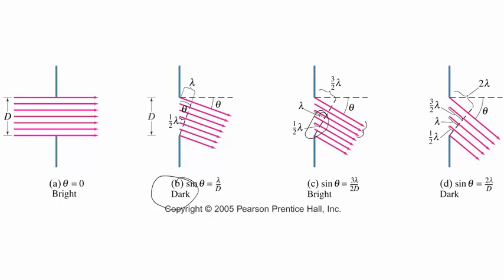Here if you're off by two wavelengths, then these guys cancel with those guys, and these guys cancel with those guys, and you get a dark spot again.